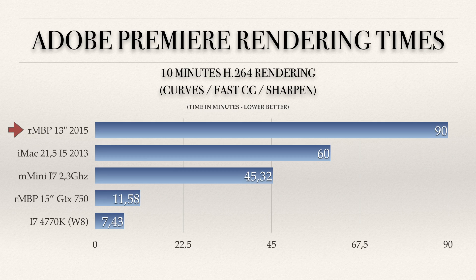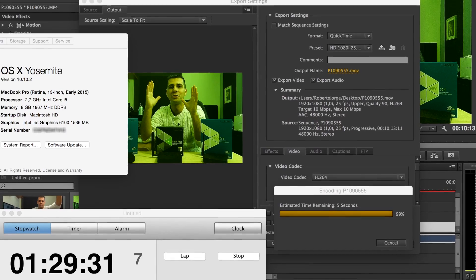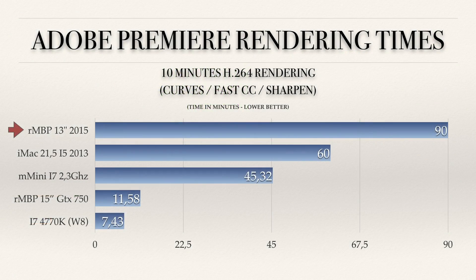The same 10-minute QuickTime H.264 file was tested with curves, fast color correction, and sharpen applied. There is a huge difference in time: with these three effects, it took 90 minutes to render on the 13-inch, which in my opinion is not good at all. Comparing with the Retina MacBook Pro 15-inch late 2014 with the GTX 750, it takes 11 minutes and 58 seconds — largely due to the GTX 750's CUDA cores helping with rendering.